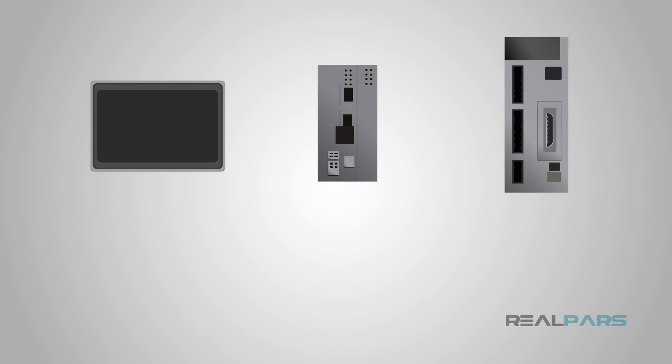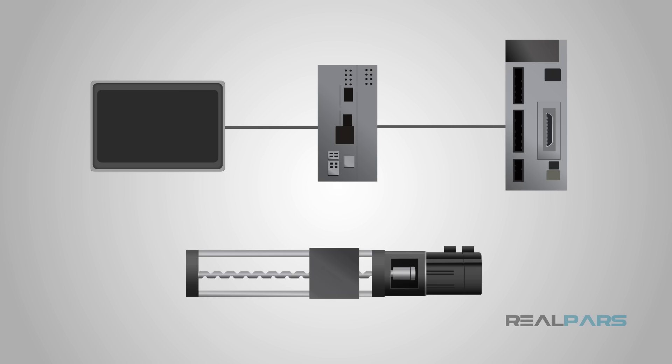Let's begin with the servo motor basics. Servo motors are part of a closed-loop system and are comprised of several parts, namely a control circuit, servo motor, shaft, amplifier, and either an encoder or resolver.